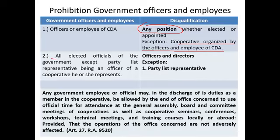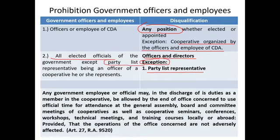All elected officials — congressmen, senators, the president, vice president, mayor, vice mayor, and councilors — are prohibited from being officers and directors of cooperatives. The exception is a party list representative — a party list representative may be an officer of a cooperative that he or she represents.